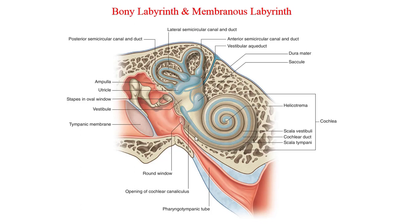Due to the size difference between the bony and membranous labyrinth, there is a space between the two structures that is filled with a fluid known as perilymph. The lumen of the membranous labyrinth consists of another fluid known as endolymph. The internal ear can be divided into three general parts: the cochlear part, which is the auditory component concerned with hearing; the vestibular component, which deals with balance while stationary; and the semicircular component, which regulates balance while in motion.